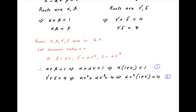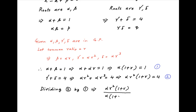Now, dividing result 2 by result 1, we get alpha r squared times (1 plus r) divided by alpha times (1 plus r) equals 4. Alpha times (1 plus r) cancels across the numerator and denominator on the left-hand side, and therefore r squared equals 4, which implies r equals plus 2 or minus 2.